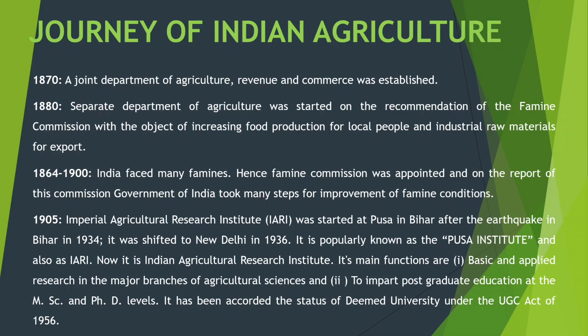In 1905, IARI — Imperial Agricultural Research Institute — स्टार्ट हुआ था पूसा, बिहार में। But earthquake के कारण इसे New Delhi में shift कर दिया गया in 1936। यह जाना जाता है Pusa Institute, and also as IARI — Indian Agricultural Research Institute. Its main functions are: basic applied research in the major branches of agricultural research, and to impart postgraduate education at the MSc and PhD levels. It has been accorded the status of deemed university under the UGC Act of 1956.